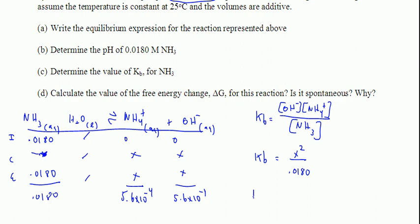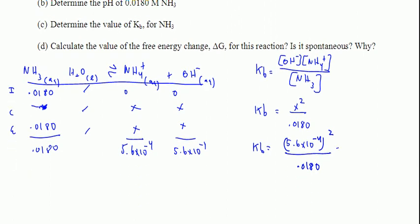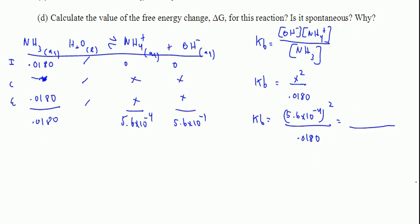Determine the KB. So KB is going to be equal to 5.6 times 10 to the minus fourth squared divided by 0.0180. I'm going to let you guys finish the math on these calculations. KB does not have units.